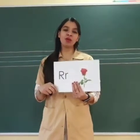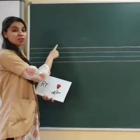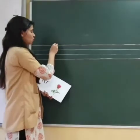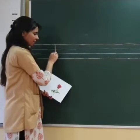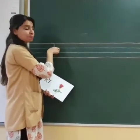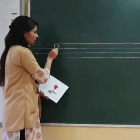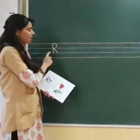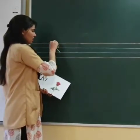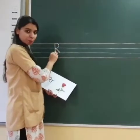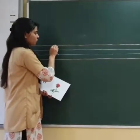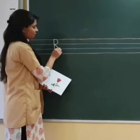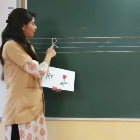Now let us see on the blackboard how do we write letter R. Here we have red and blue lines. We will start writing from the first red line to the second blue line. We will draw a straight standing line. Then from the first red line to the first blue line, we will draw a bumpity. And from here we will continue a slanting line towards the second blue line. This gives us capital R.